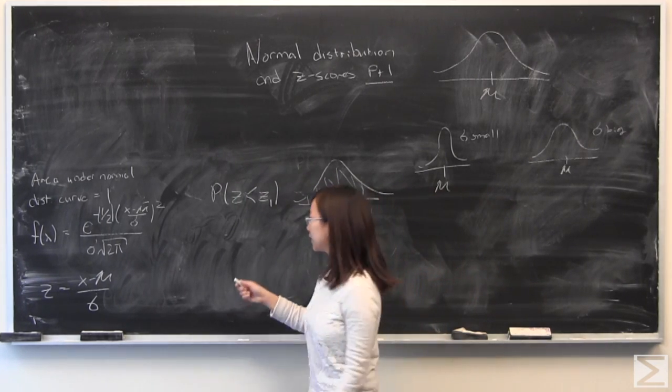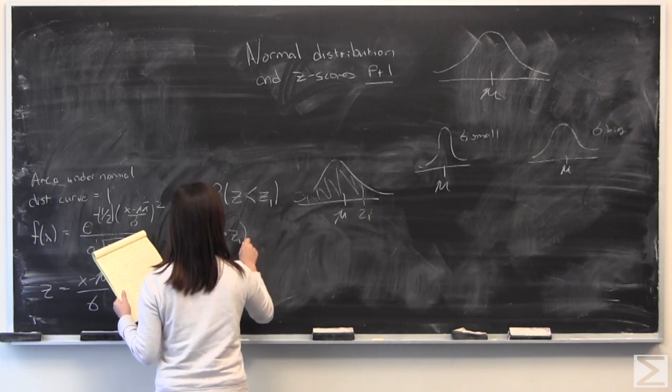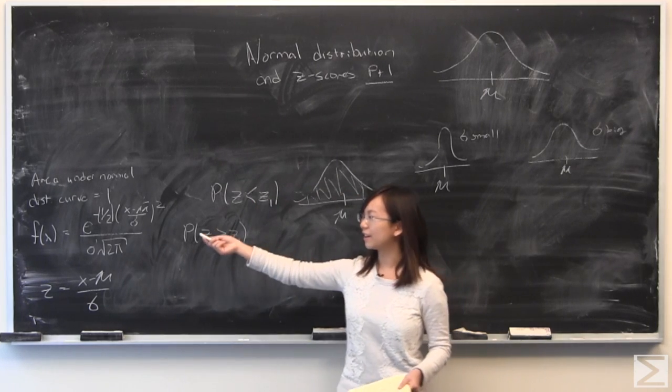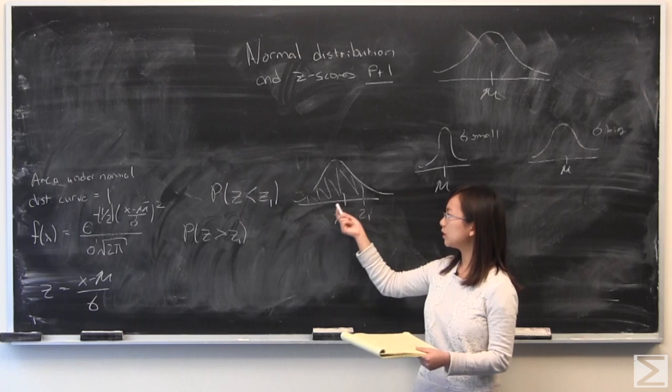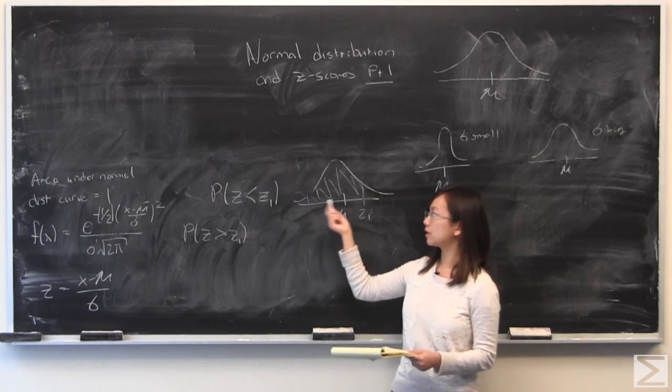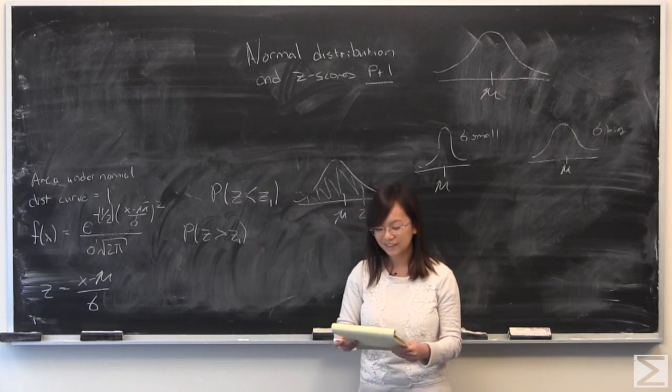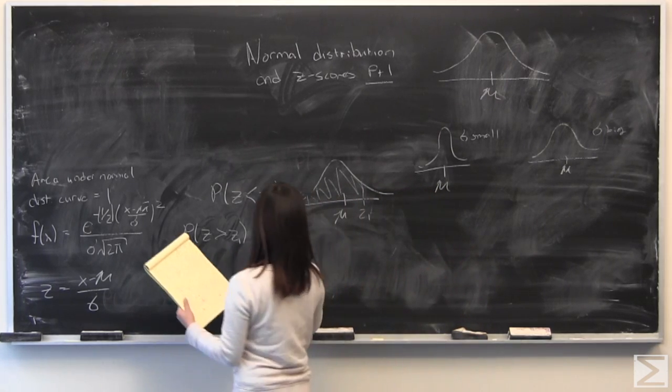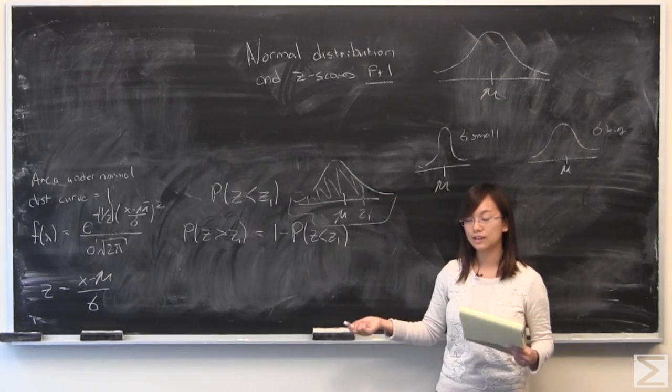Okay, so next I'm going to talk about probability of finding z greater than z1. And if you recall, the area under the normal distribution curve is 1. So by subtracting this area that we've already found by 1, we can easily find P(z greater than z1). So this is 1 minus P(z less than z1).